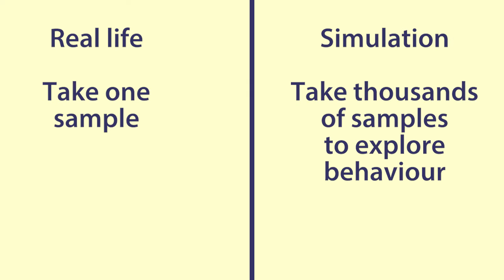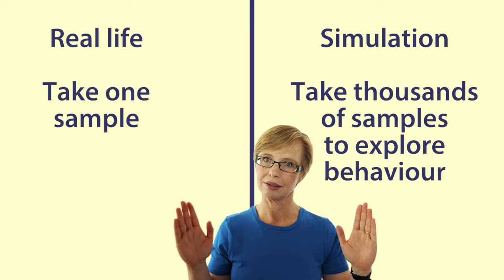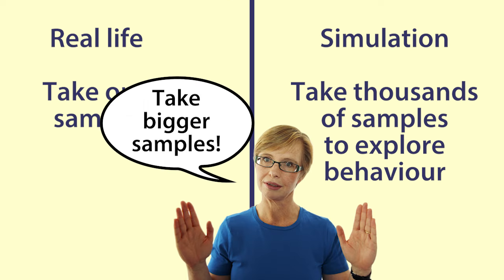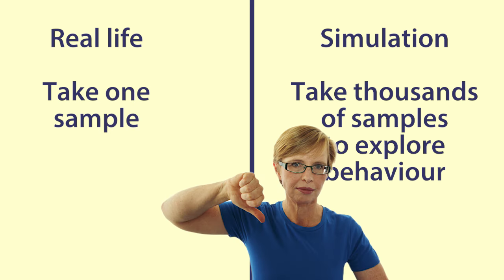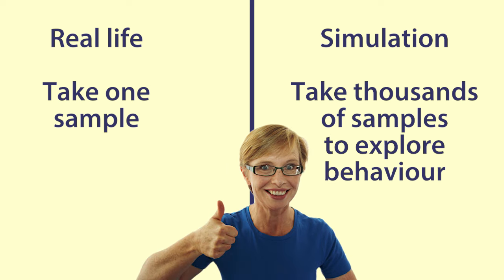You only ever take one sample from a population. We took thousands of samples to illustrate what a sampling distribution looks like. The central limit theorem only works under some conditions and with big enough sample sizes. Four is actually far too small, though you can still see the effect. Under most conditions, samples of 30 are sufficient.